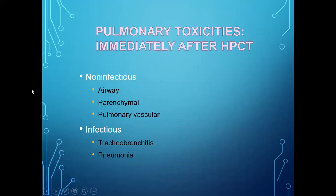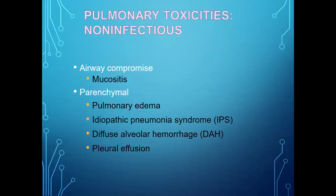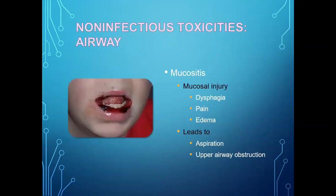Immediate post-HPCT pulmonary toxicity can be non-infectious or infectious. Under non-infectious: airway and parenchymal causes. Under airway: mucositis. Under parenchymal: pulmonary edema, idiopathic pneumonia syndrome, diffuse alveolar hemorrhage, and pleural effusion. Under infectious: tracheobronchitis and pneumonia.